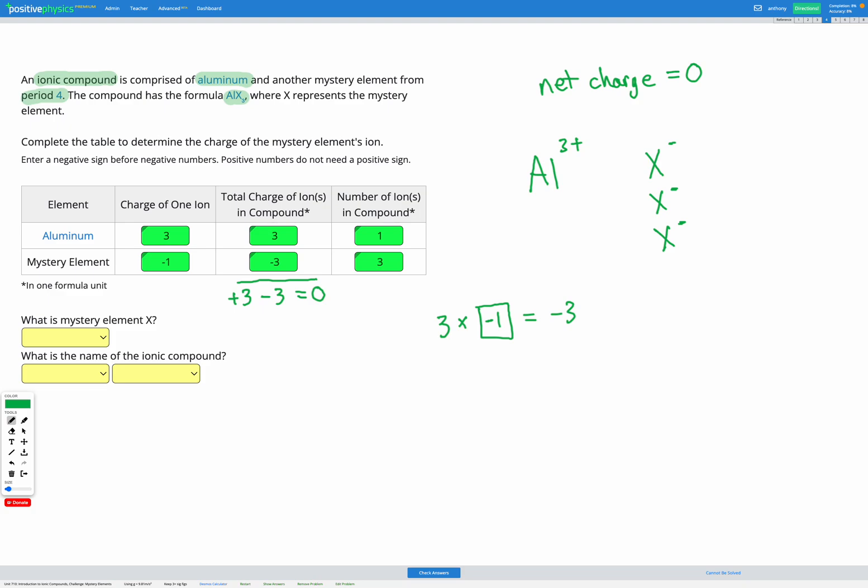So we now know the charge of our ion is negative one and our goal is to now find our mystery element X. So we know it's in period four because they told us that in the question. So we know X is in period four. We also know it has a charge of negative one. So let's go and have a look at our periodic table.